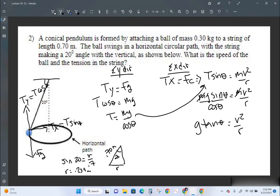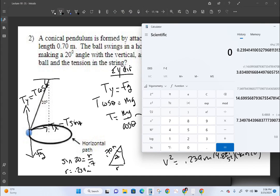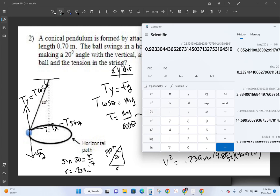So if we want to find V squared, V squared is just going to be R, G, tan theta. Wow, it looks just like what we had before on the banked angle. That's crazy. So V squared equals 0.239 meters times 9.8 meters per second squared times tan of 20. And we put all those numbers in there. Okay, I'm going to do 20, I'm going to take tan of it, times 9.8 times 0.239 equals, and then I'm going to take the square root of that, V is going to be equal to 0.923.